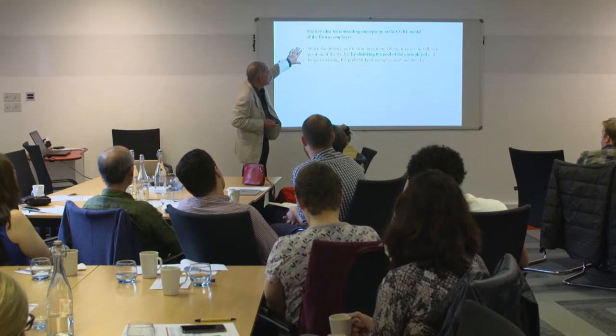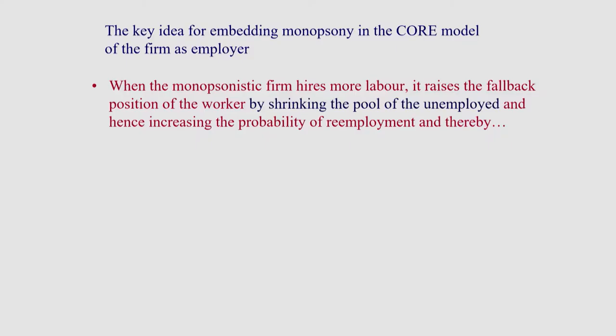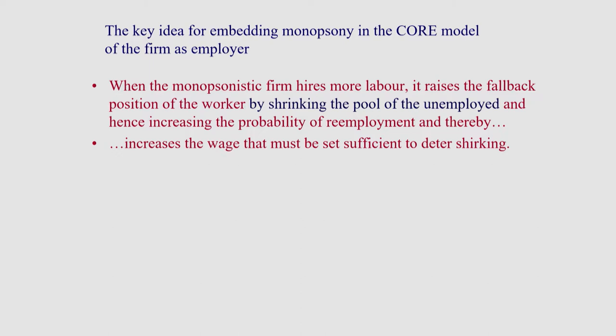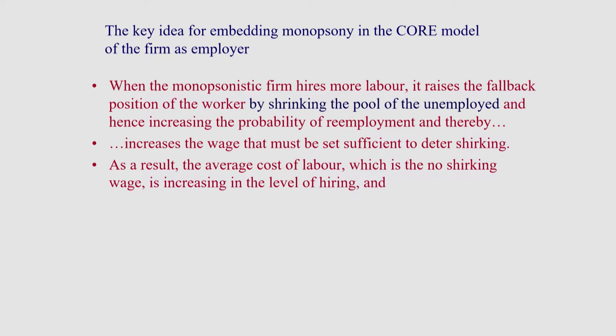The key idea is that the monopsonistic firm hires more labor, which raises the fallback position. That means it increases the wage the firm has to set to deter shirking. I'm now using a no-shirking model and asking: what is the least wage the firm has to pay to deter shirking? That's going to rise the more the firm hires because the less bad being unemployed is under those circumstances. The average cost of labor — the no-shirking wage — is going to be increasing in the level of hiring. That gives you your rising average cost of labor curve.